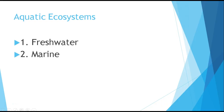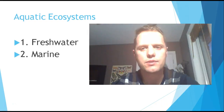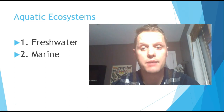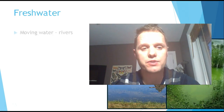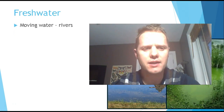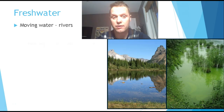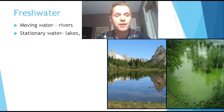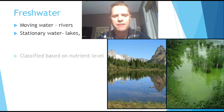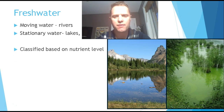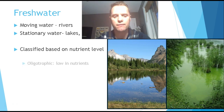To start, we're going to talk about aquatic ecosystems. There are two types: freshwater and marine. Freshwater ecosystems can consist of moving waters like rivers, or stationary waters like lakes and ponds. We can classify them based upon their nutrient level.